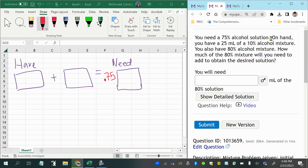Then it says on hand, so what we have is going to go on the left side. We have 25 milliliters of 10% alcohol mixture. So that means I can put a 0.10 in front of one of my boxes on the have side for 10% times 25 milliliters.